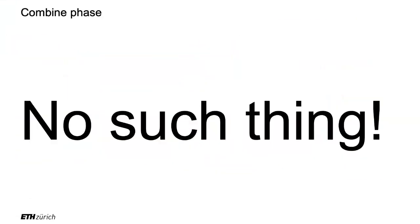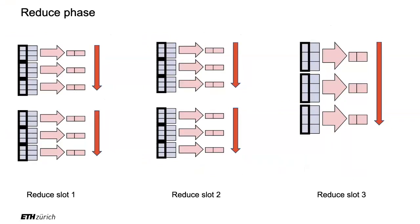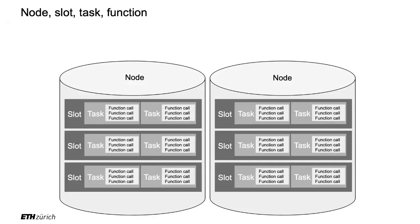Between the map phase and reduce phase, you have the shuffle. There is no combine phase — only a combine function. Here's the full picture: two machines each with three CPU cores gives six slots. Each slot processes tasks sequentially, and within each task you call the function sequentially. Some slots are assigned to map, some to reduce. If you understand this, you understand how MapReduce actually works.